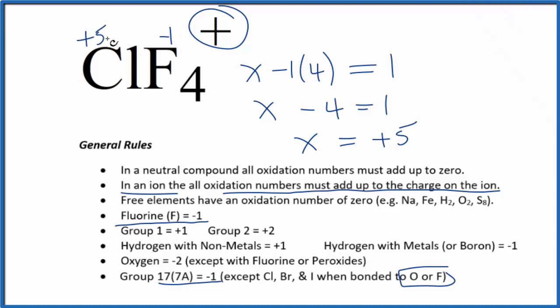If we add these numbers up, 4 times -1 is -4. Negative 4 plus 5 gives us this positive here, +1.